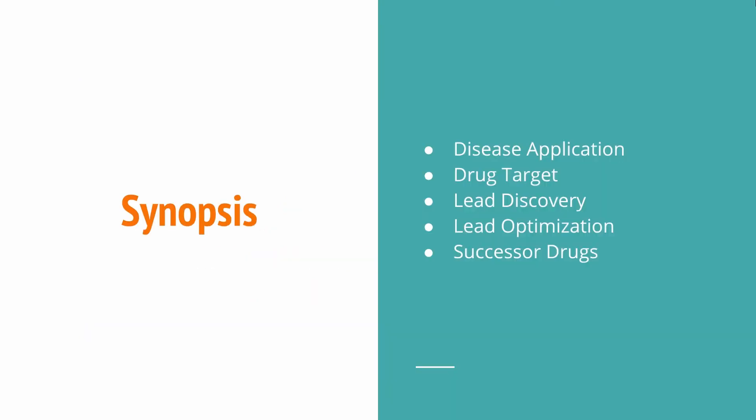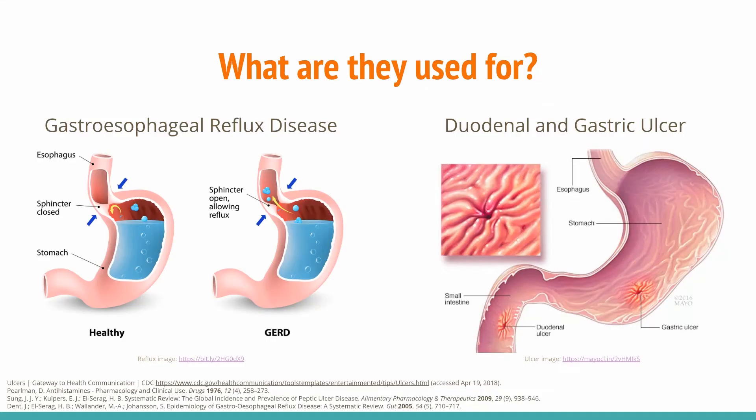Today we'll be learning about what diseases H2 antagonists are used for, the specific target for this class, lead discovery and optimization, and finally successor drugs. H2 antagonists are commonly used to treat gastroesophageal disease and peptic ulcer disease.